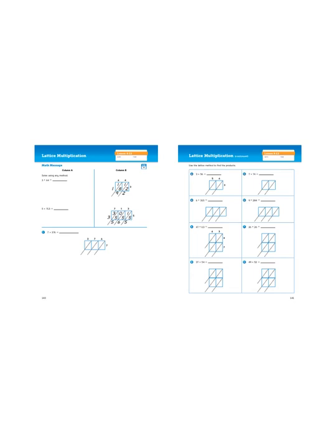Hello again boys and girls, it's Mr. Wassman, and today we are looking at a third way to approach multi-digit multiplication. It's called lattice multiplication. We are in our math journals on pages 140 and 141, lesson 13 in unit 4.